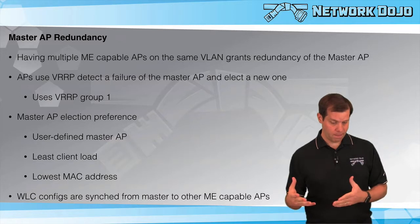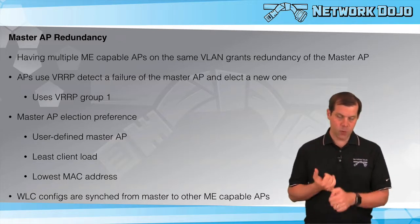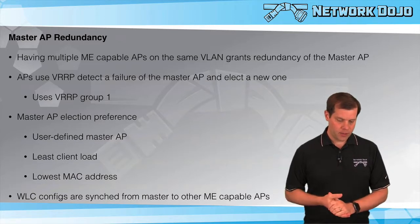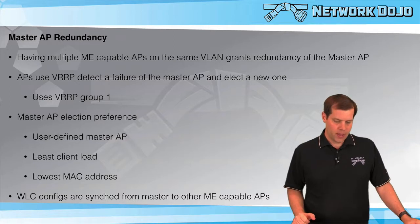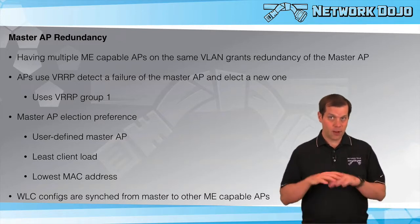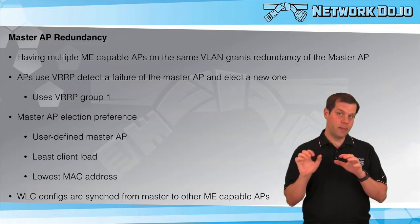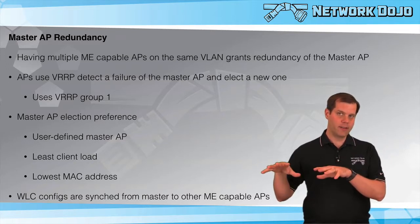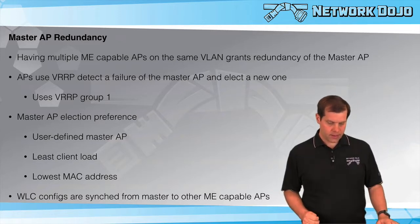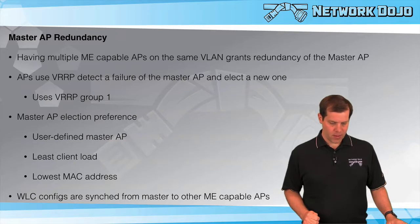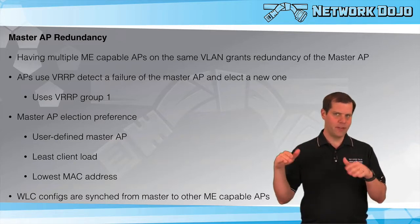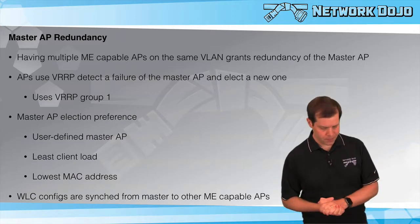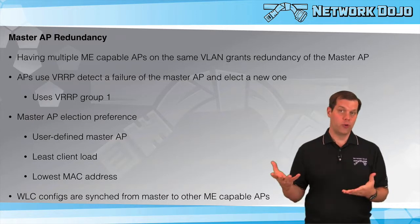In an election, there are three tiers for picking the winner. First, you can define one AP as the desired master — that AP wins over any other. Second, the AP with the least client load wins. Third, the tiebreaker is the AP with the lowest MAC address, which would apply when two APs boot simultaneously with no clients. Once there's an established master AP, any APs booting up defer to it and don't start an election unless we force a failover.